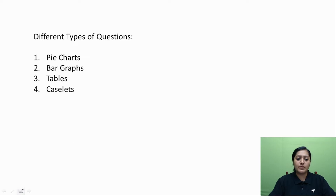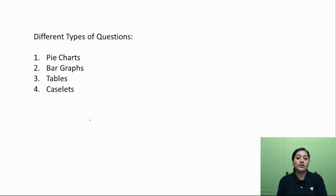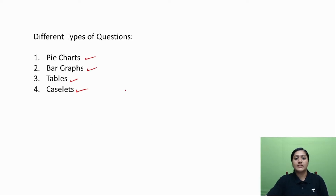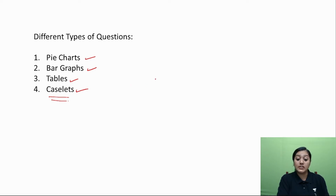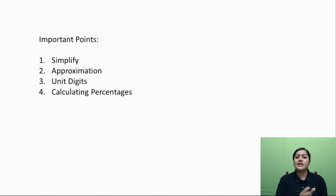Data interpretation is all about visualization — how you see your data and what you can actually infer out of it. You can get different types of questions: pie charts, bar graphs, tables, or caselets. Observing previous year questions of CLAT, we are usually getting caselets, and the most important thing when we talk about caselets are percentages. I'm going to talk about each — pie chart, bar graph, table, and caselet — covering basics and what we need to focus on.